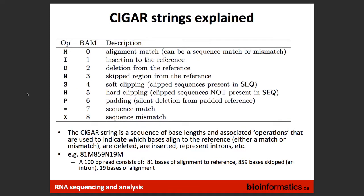The CIGAR string describes how each base in your read mapped. For example, a CIGAR of '81M859N19M' means 81 bases matched, 859 did not match (representing the intronic gap that couldn't be mapped), and then 19 bases matched. You can use this information to figure out the length of intronic or splice junction regions. It also provides information like soft-clipped and hard-clipped bases.